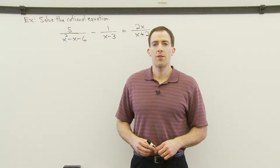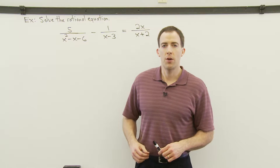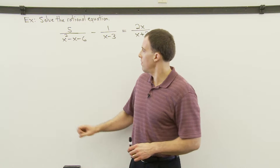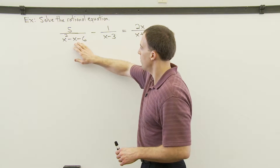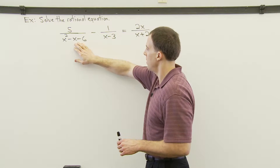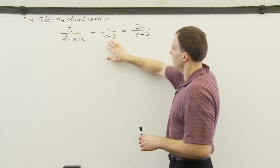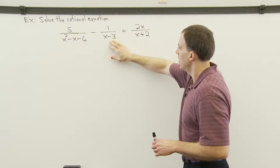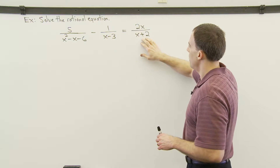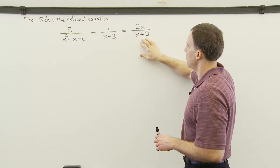In this example, we're asked to solve the rational equation. We're given 5 over x squared minus x minus 6, minus 1 over x minus 3, equals 2x over x plus 2.